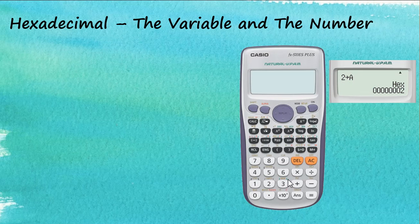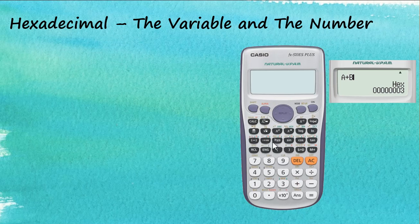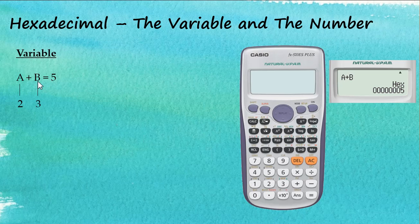After that, let's store number 3 using SHIFT → STORE into B. So now we have 2 in A and 3 in B. We'd like to perform a calculation: ALPHA A plus ALPHA B. The answer is 5, which is reasonable because A is 2 and B is 3, and 2 plus 3 equals 5.